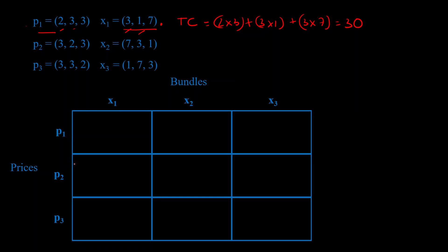We have a table here which is going to visualize this process. On the row side I have the three price sets P1, P2, P3, and on the columns I have the respective bundles X1, X2, X3. Each box represents how much it costs to get a particular bundle at a particular price — for example, the cost of X1 at price P1, which we calculated as 30.